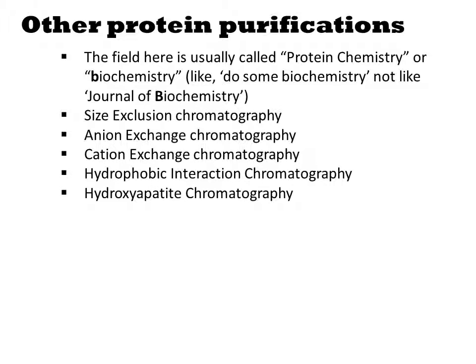Size exclusion chromatography separates the proteins by size. Large proteins spend less time diffusing into the resin and elute faster. Often size exclusion is performed after affinity purification. The combination of these two methods is the most common way of making high purity protein samples.